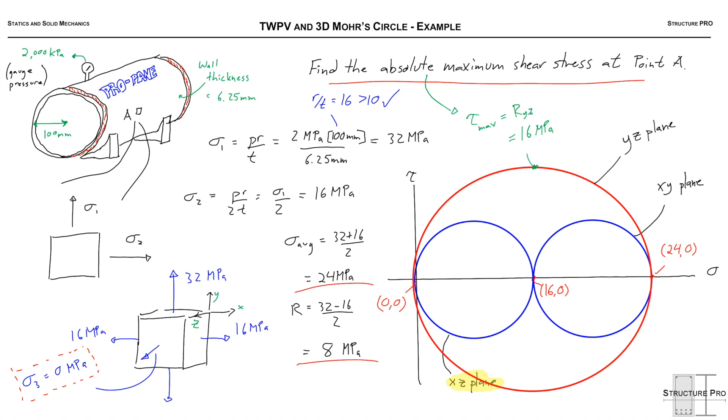I've labeled that at the top here: tau max is the radius of the YZ Mohr circle, or in this case 16 MPa. It's not hard to identify once you've drawn the circles. So just to recap, let's draw each of these planes corresponding to each of these circles and see what the element would look like.